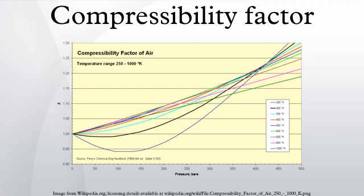Generalized compressibility factor graphs for pure gases: The unique relationship between the compressibility factor and the reduced temperature Tr and reduced pressure Pr was first recognized by Johannes Diderik van der Waals in 1873 and is known as the two-parameter principle of corresponding states. The principle expresses the generalization that properties of a gas which are dependent on intermolecular forces are related to the critical properties of the gas in a universal way.